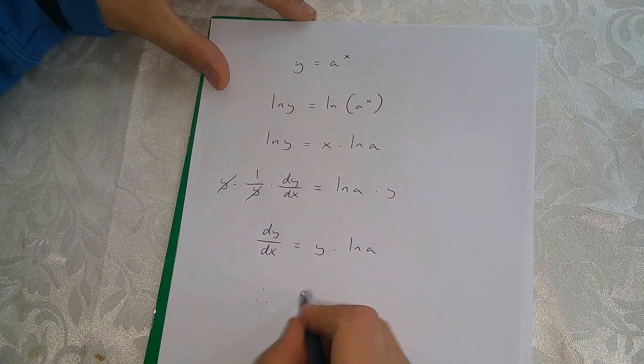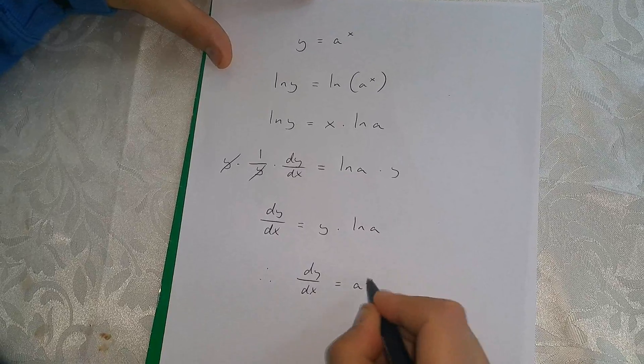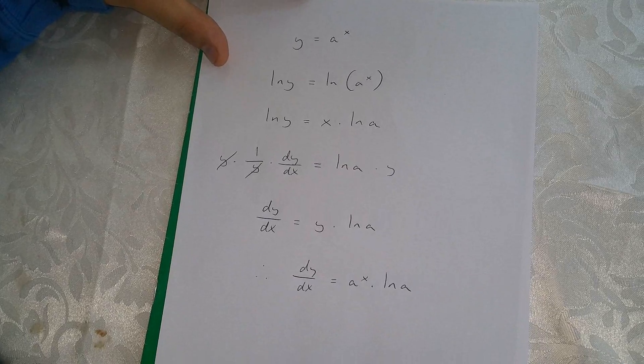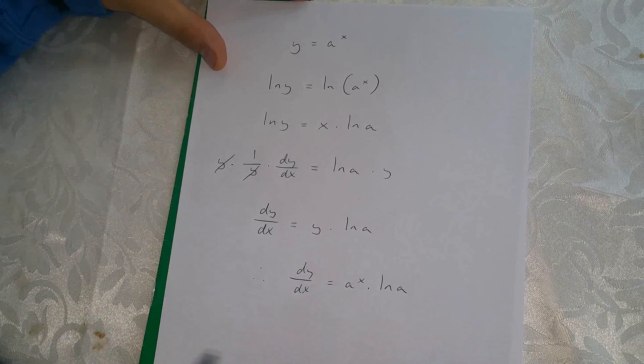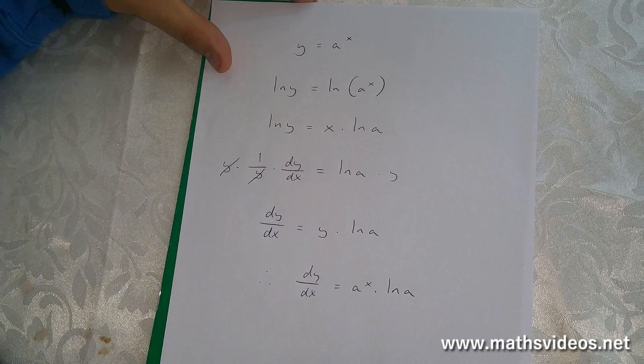Therefore, dy over dx equals a to the power of x times ln a. And we've differentiated this expression over here. Thanks for watching this video.